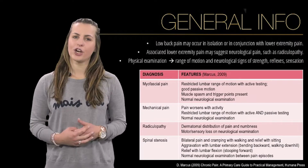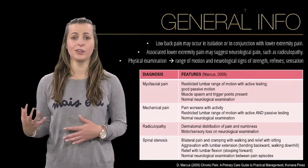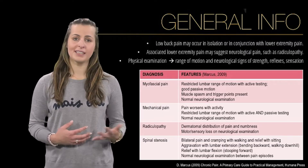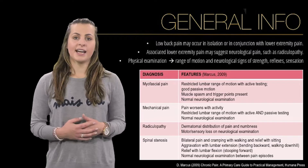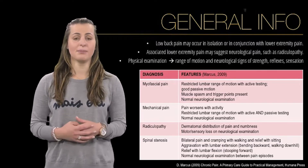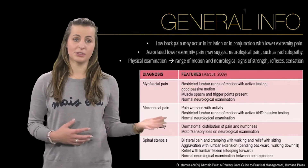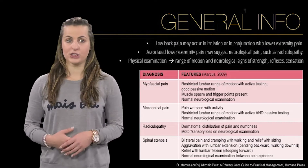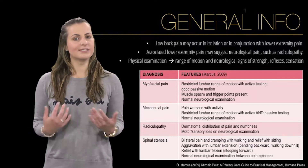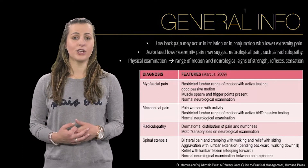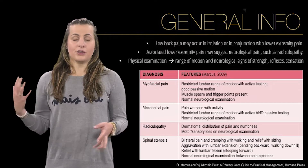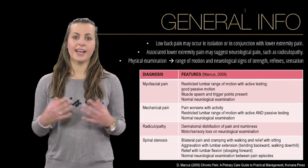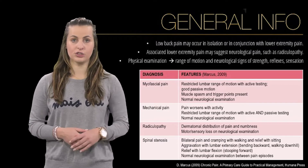Low back pain may occur in isolation or in conjunction with lower extremity pain. Associated lower extremity pain may suggest a neurological cause such as radiculopathy. Signs and symptoms help differentiate among common causes of back pain, and neurological symptoms or deficits suggest the need for additional evaluations. Therefore the physical examination should include an evaluation of range of motion, neurological signs of strength, reflexes and sensation — which is why a solid anatomical knowledge is required.